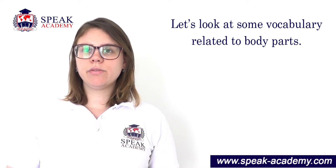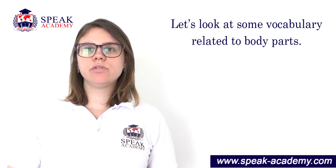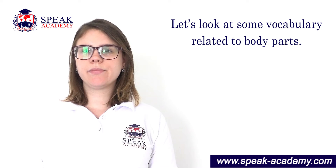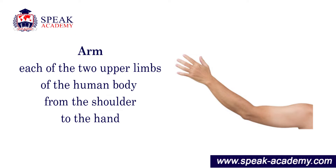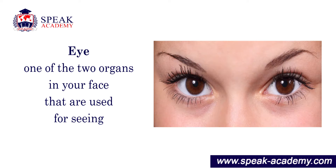Let's look at some vocabulary related to body parts. Arm: each of the two upper limbs of the human body from the shoulder to the hand. Eye: one of the two organs in your face that are used for seeing.